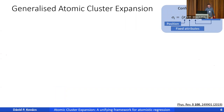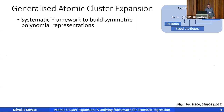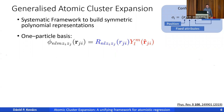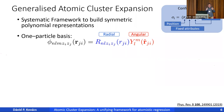What is generalized atomic cluster expansion? First, atomic cluster expansion is a framework of symmetric polynomials introduced around 2019 by Ralf Drautz. It builds a complete polynomial basis for atomic environments. The basic building block is the one-particle basis, which has a radial part taking the distance between atoms as argument and an angular part taking unit vectors on the sphere, representing all angular information. Here r_ji is the central atom and j is one neighbor, so this is in some sense an edge feature.